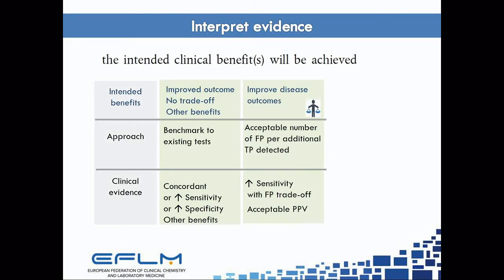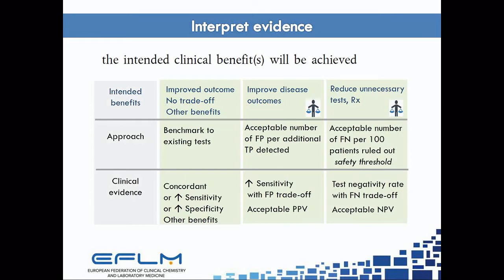If you're claiming improved disease outcomes, results are interpreted in terms of whether that trade-off is acceptable — is that an acceptable positive predictive value? If the intended benefits are to rule out and avoid unnecessary further testing, you're interpreting the safety of using that test in clinical terms: the consequences of those false negatives according to what your negative predictive value is. And of course, the test has to assess some people as negative, otherwise you won't achieve any new benefits of ruling out.